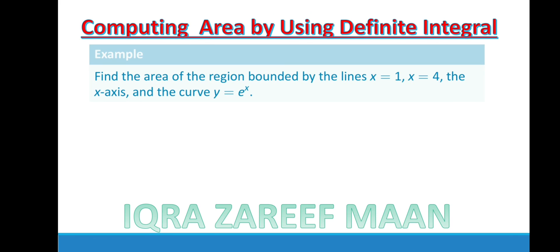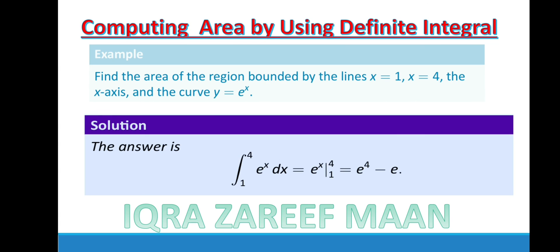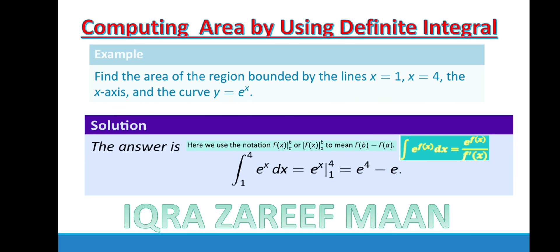Next example: find the area of the region bounded by x = 1 and x = 4 for the function y = eˣ. We use the rule: the integral of e^(f(x)) equals e^(f(x)) divided by the derivative of the exponent. Here the exponent is x, whose derivative is 1, so the integral of eˣ is eˣ itself. Evaluating from 1 to 4 gives e⁴ − e¹.